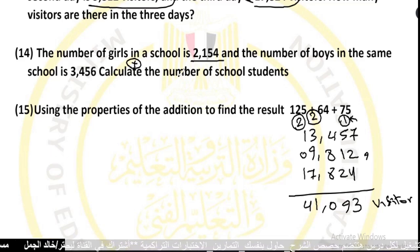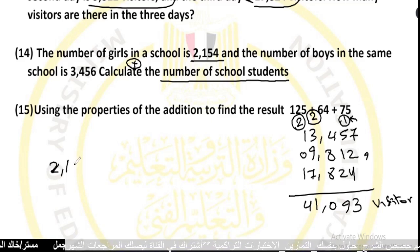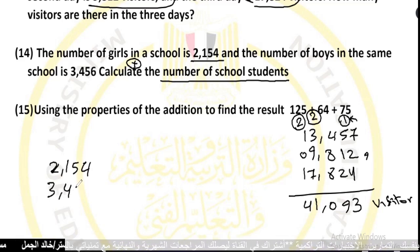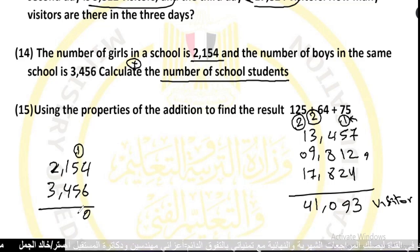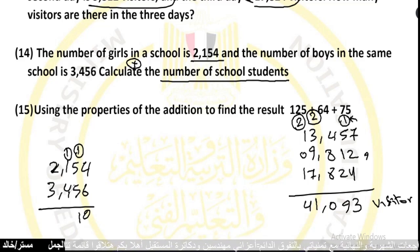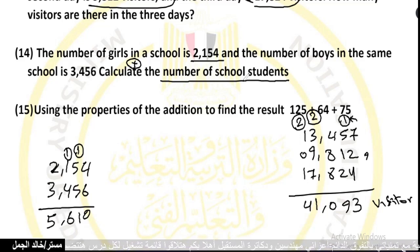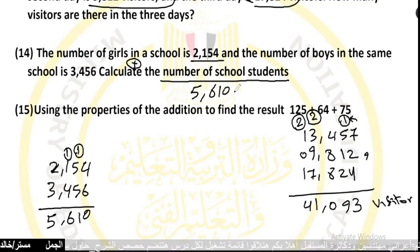The total number of students is 2,154 plus 3,456. Adding: 4 plus 6 equals 10, write 0 carry 1. 5 plus 5 equals 10 plus 1 equals 11, write 1 carry 1. 1 plus 1 equals 2, 2 plus 4 equals 6. 2 plus 3 equals 5. So the total number of school students is 5,610.